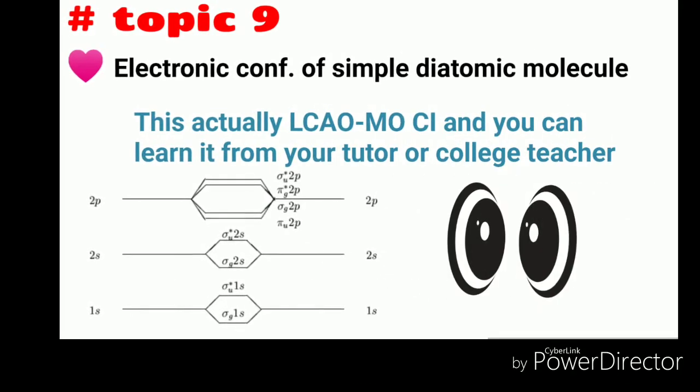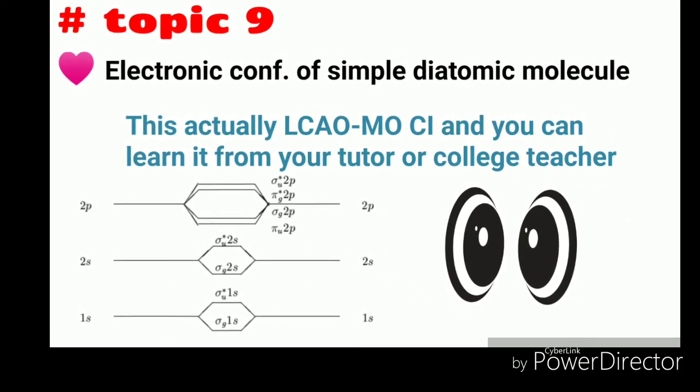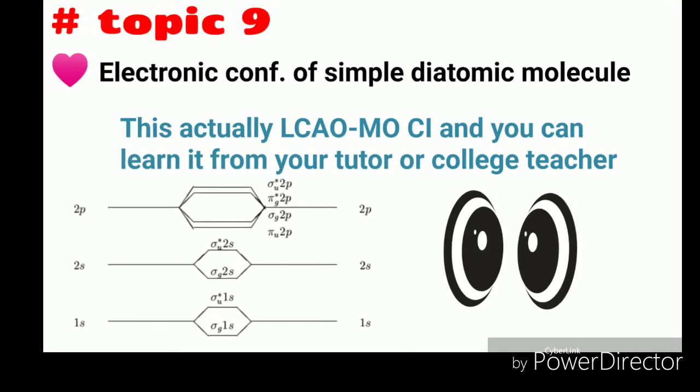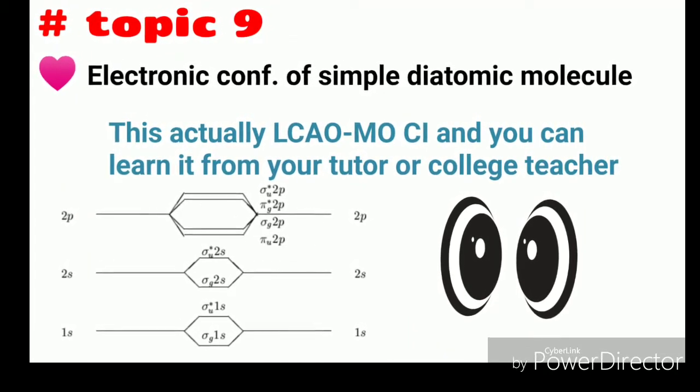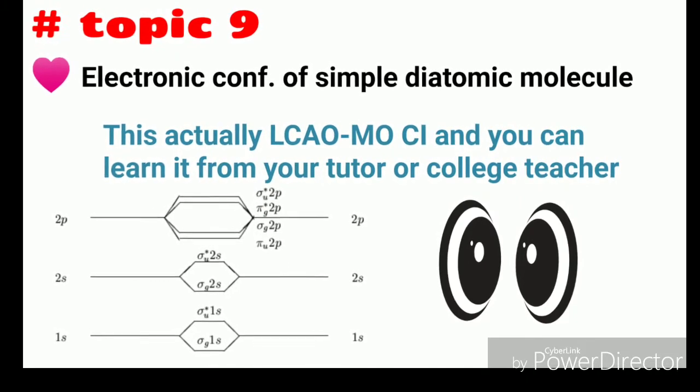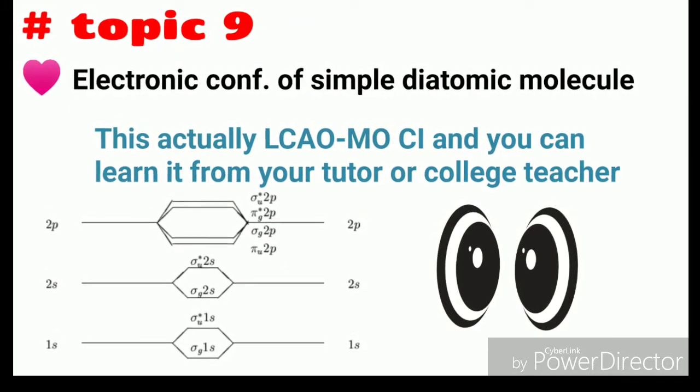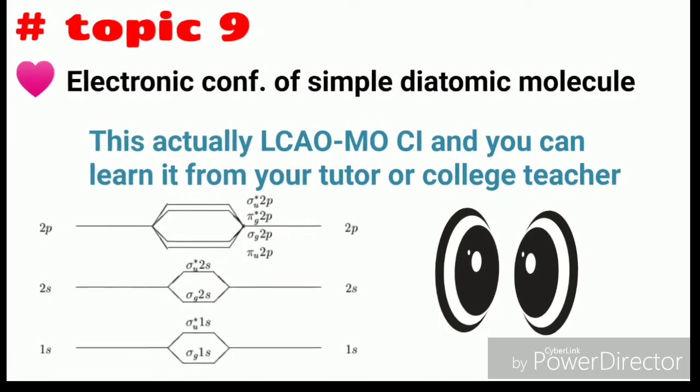The next, that is ninth topic, is electronic configuration of simple homonuclear diatomic molecule. This is actually linear combination of atomic orbital, that is LCAO-MO-CI method, and you can learn it from your tutor or college teacher.